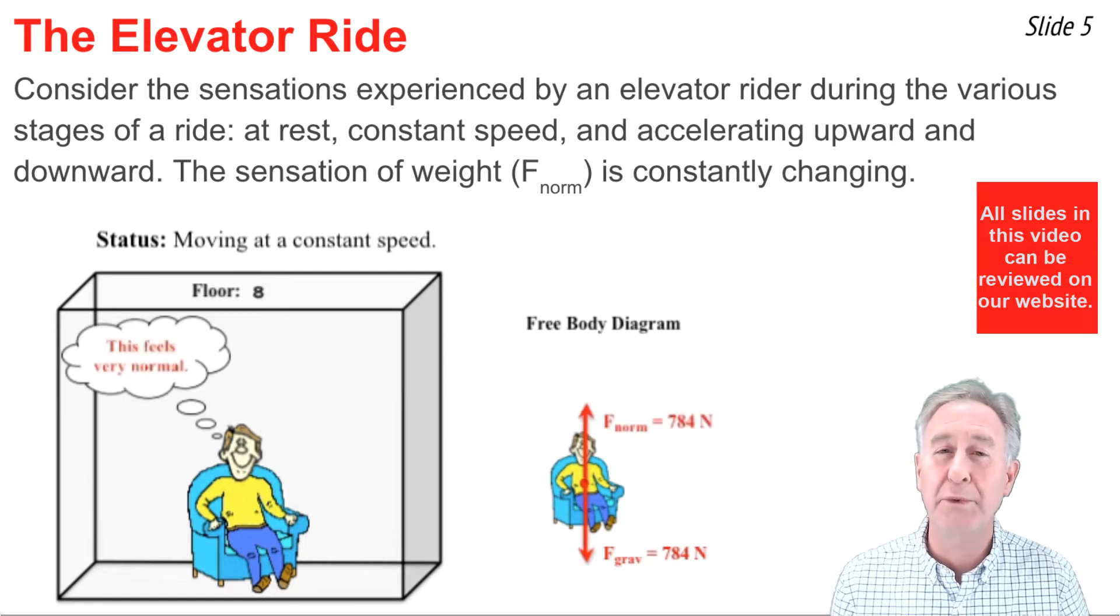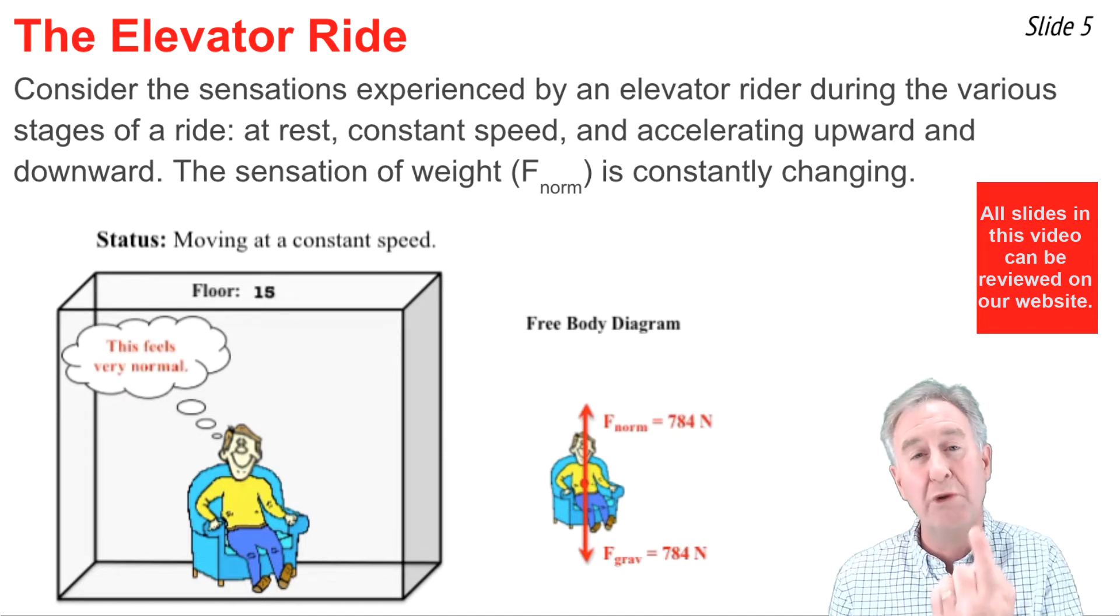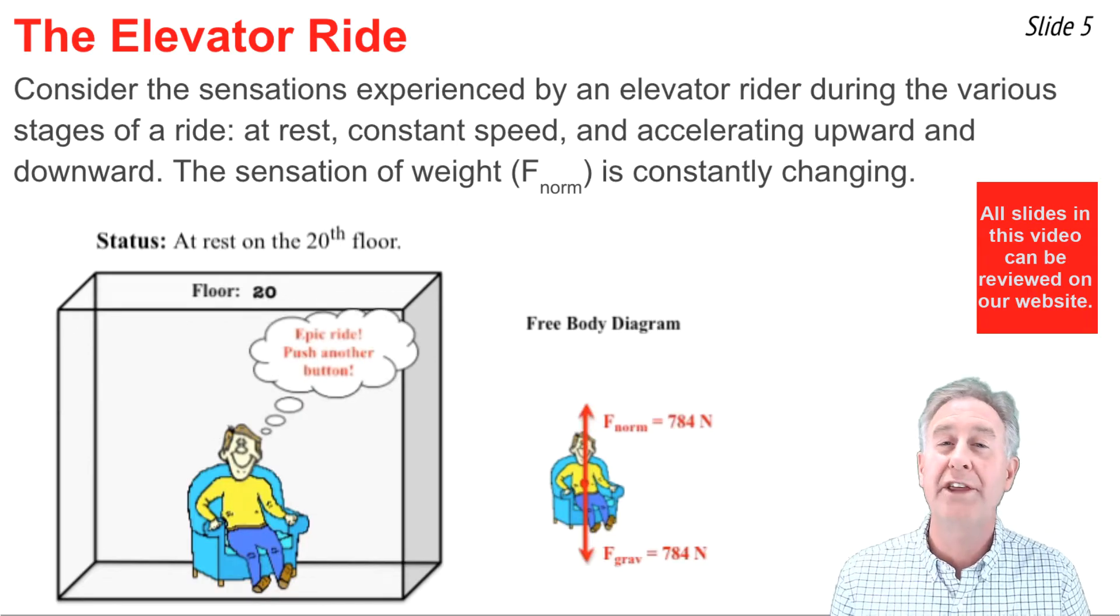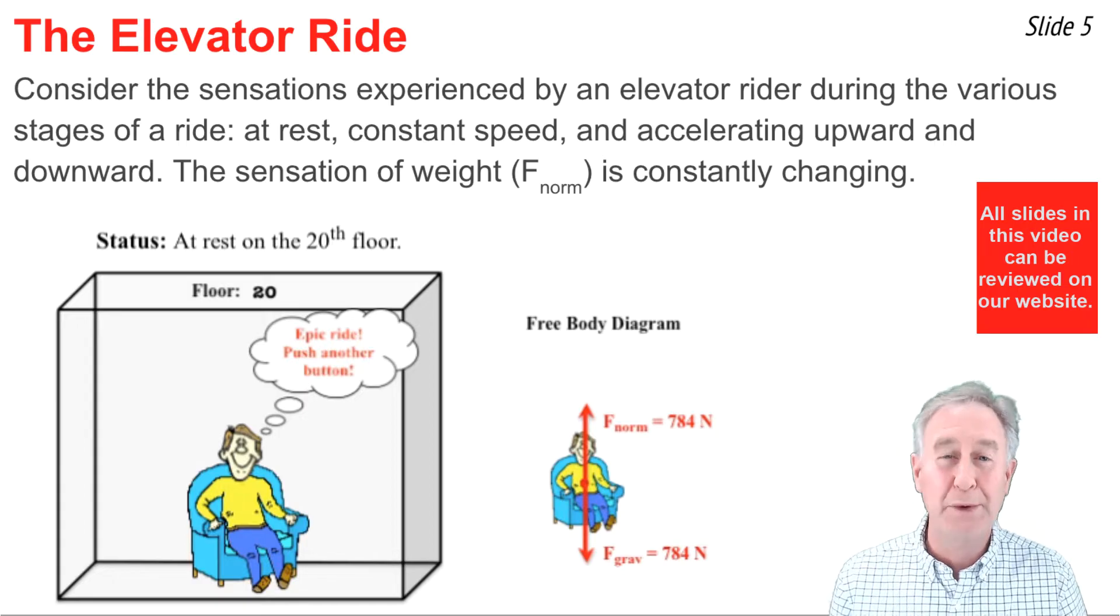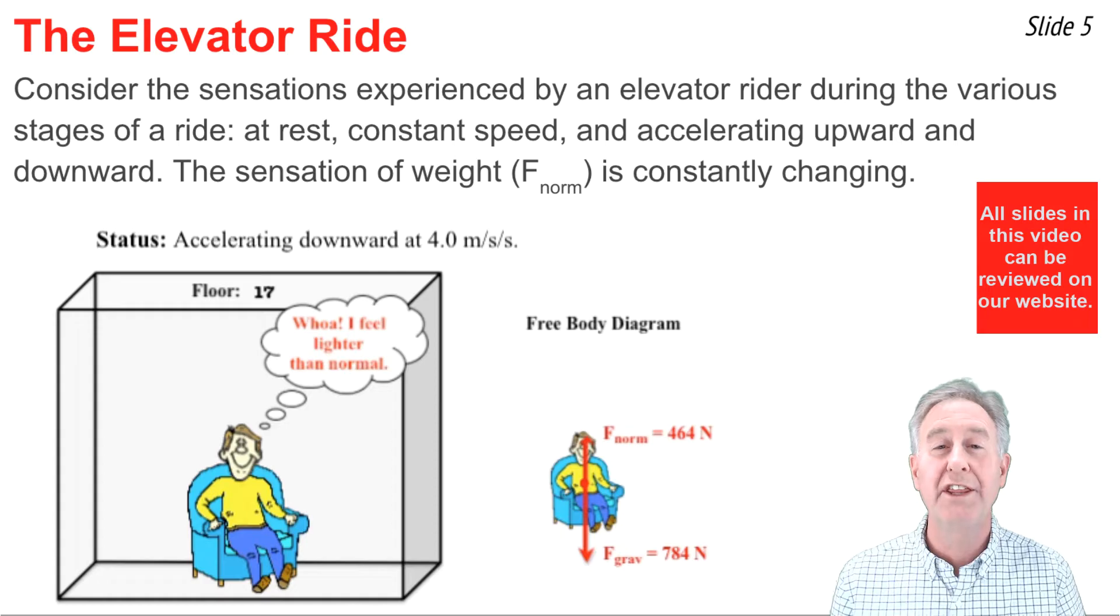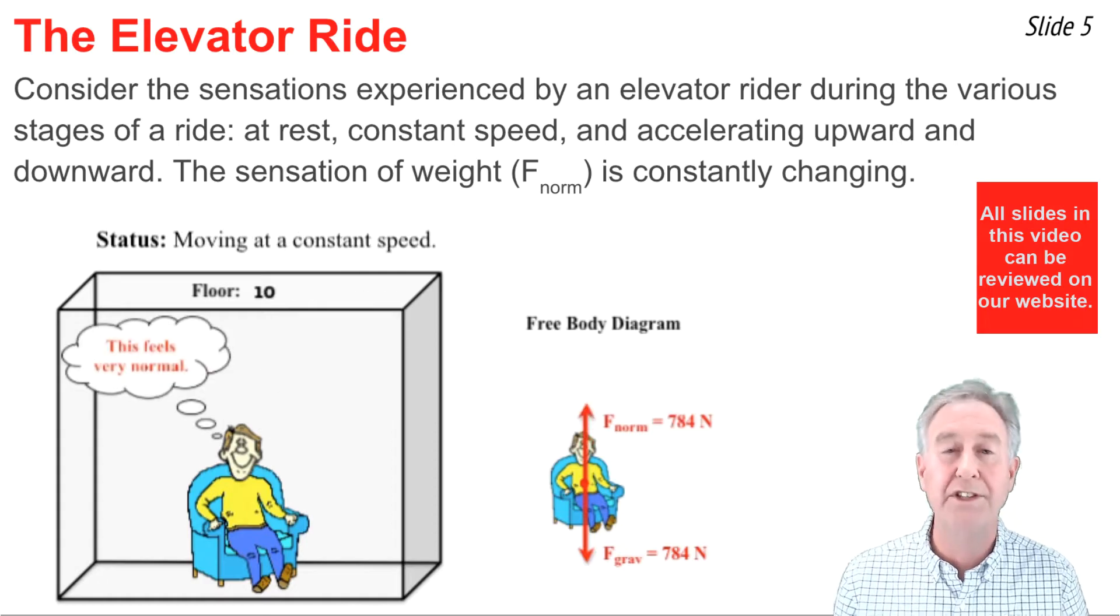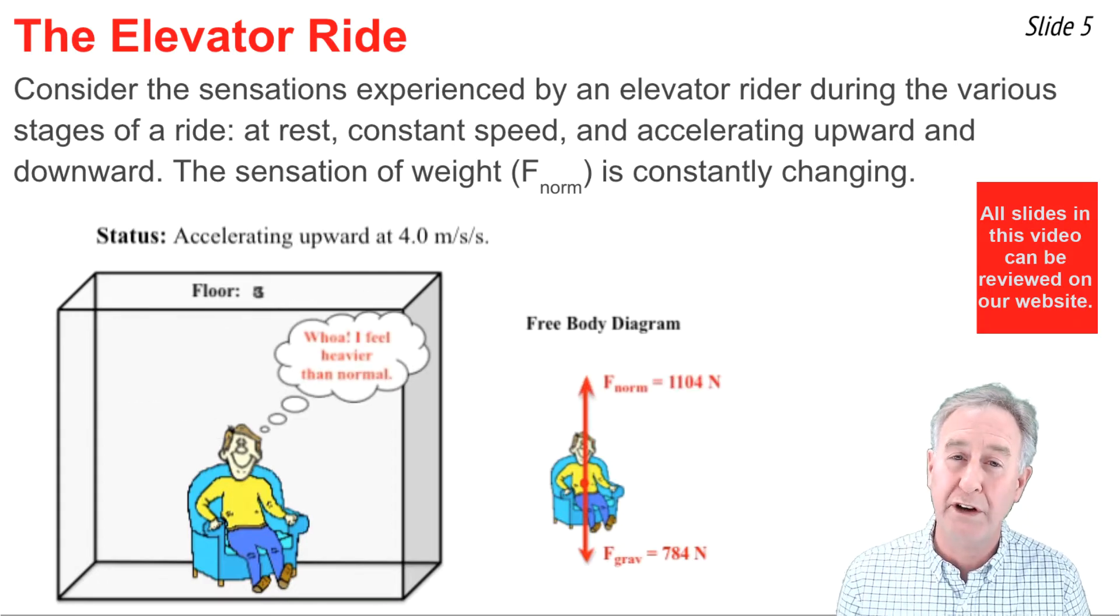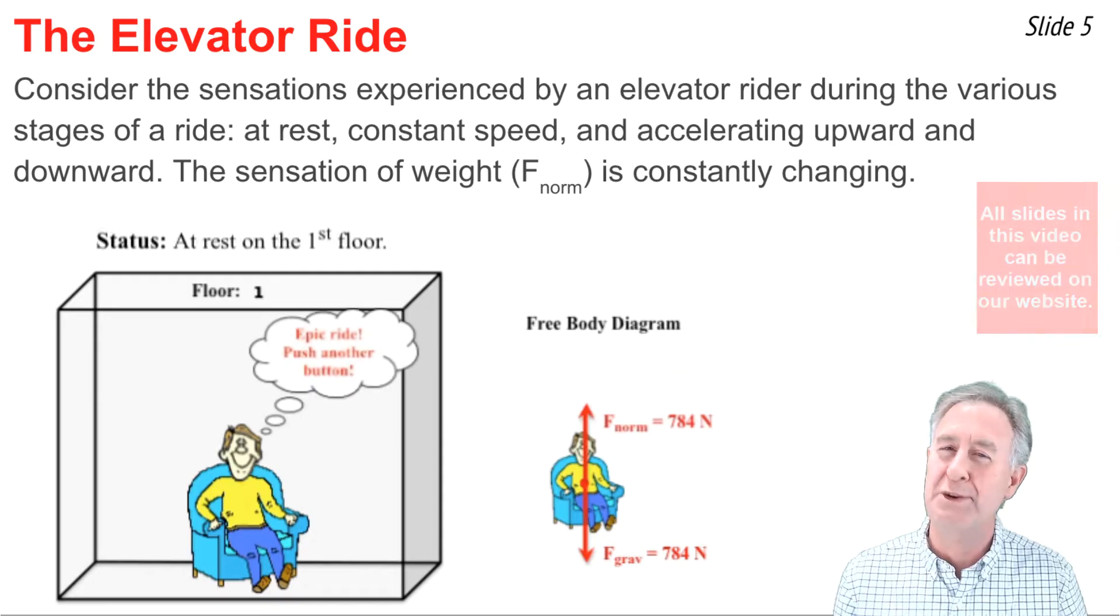On the other hand, when the rider is accelerating downwards, the normal force is less than their gravity force, and the rider feels like they weigh less than their normal weight. But when the rider is moving at constant speed or is simply at rest, the upward force of normal is the same as the downward force of gravity and the rider feels their normal weight.